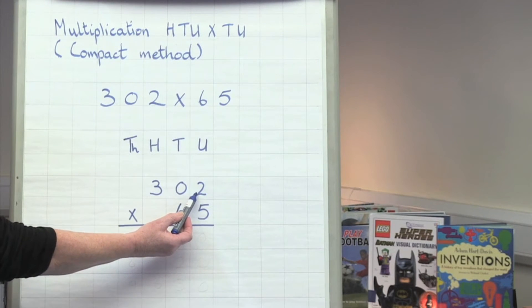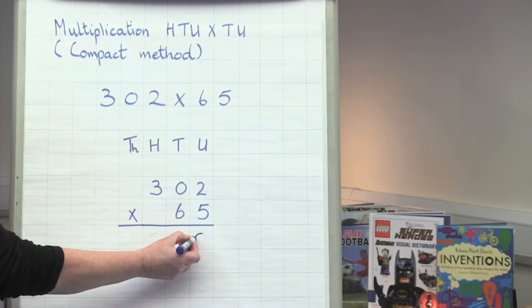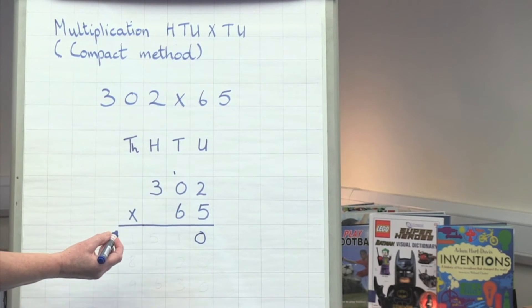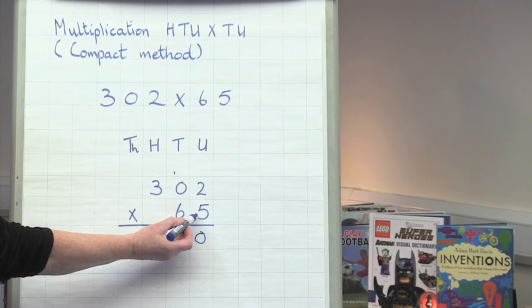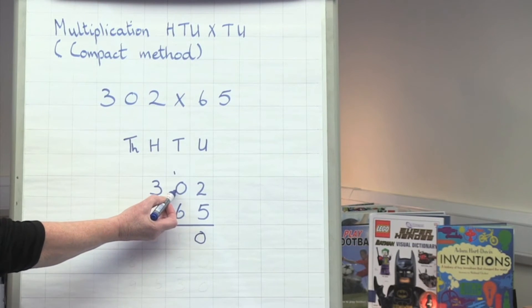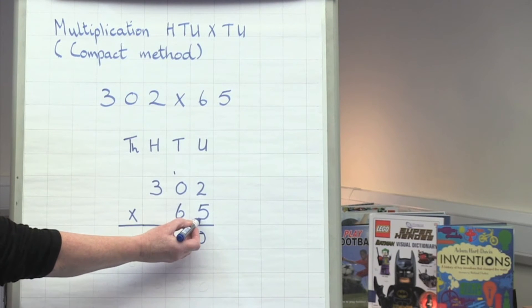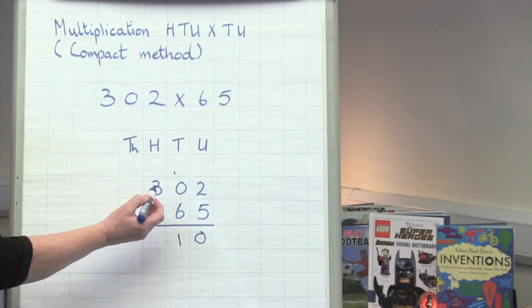5 times 2 is 10. Put down my 0. Put my 1 in the 10 space. 5 times 0 is 0 and 1 is 1. 5 times 3 is 15.